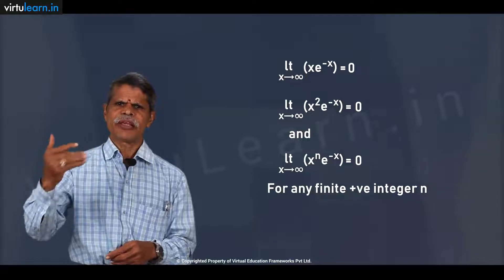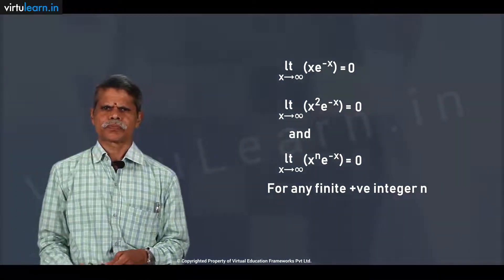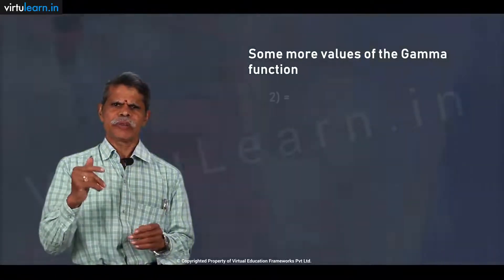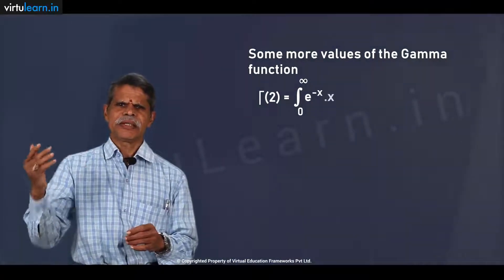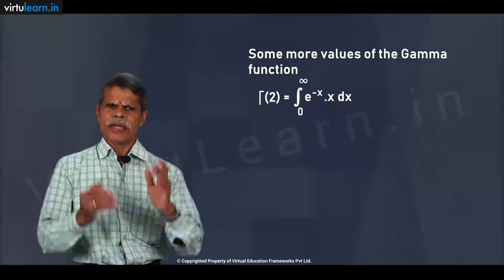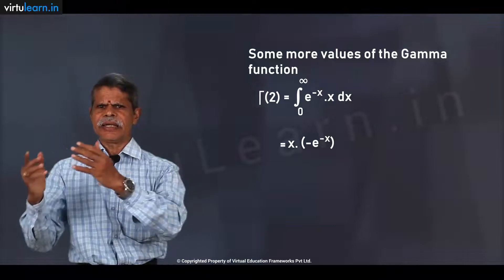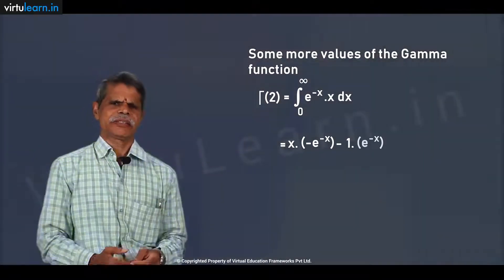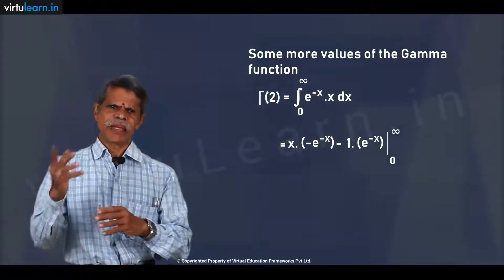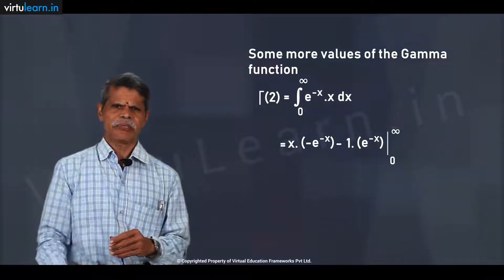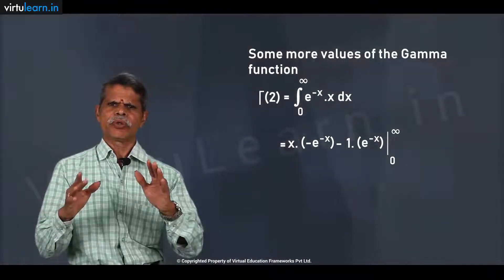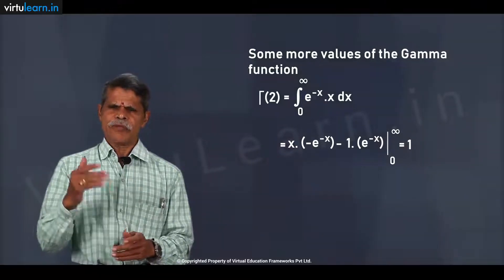Let us determine the value of the Gamma function for n = 2. Gamma(2) is the integral from 0 to infinity of e^(−x) · x dx. Using integration by parts, we get x·(−e^(−x)) minus the integral of (−e^(−x)) dx. At infinity both quantities become zero; at x = 0 the first term is zero and the second gives one. Therefore Gamma(2) = 1.